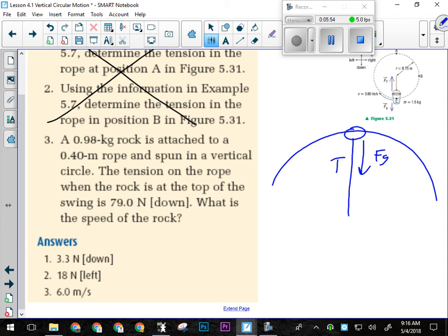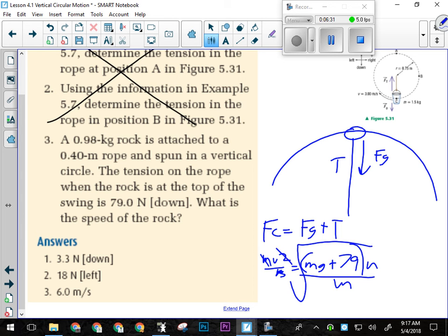So they've told us the tension is 79 newtons. We're looking for the speed of the rock. So we know that FC equals forces in minus forces out. There aren't any. This should be tension, not normal force, plus tension. There aren't any forces out, so that's it. That's all we have is these two things added together this time. So we have mv squared over r equals m times g plus 79 newtons. So if I'm looking for v, I'm going to multiply both sides by r, divide both sides by m, and then square root. That'll tell me the speed of the rock.